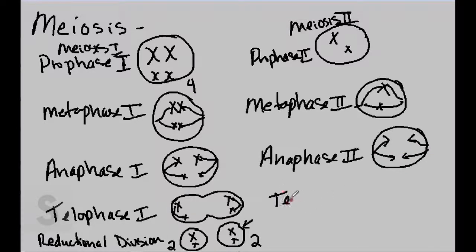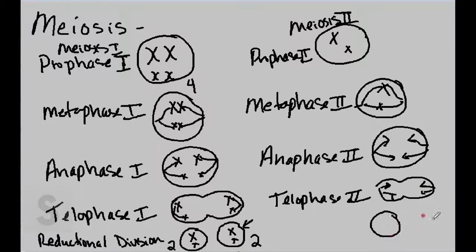And then we have telophase II, where our chromosomes are pulled apart and at the opposite poles. And finally, we undergo cytokinesis, where the cells split. This happens in every single daughter cell. So it happens in this daughter cell and it happens again in this daughter cell.